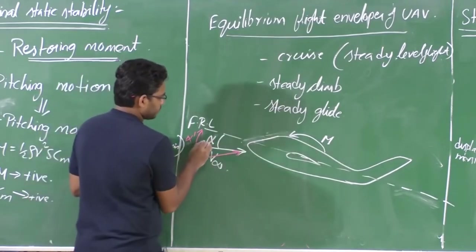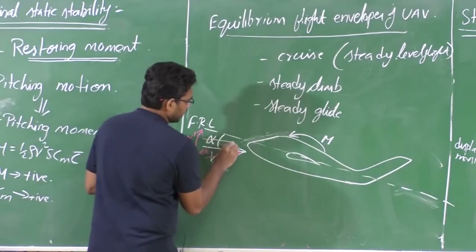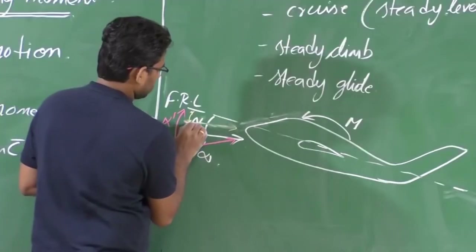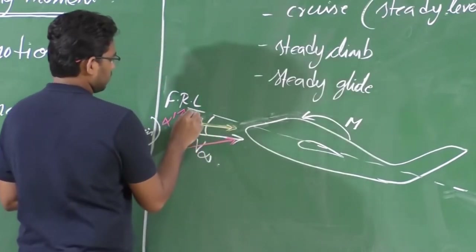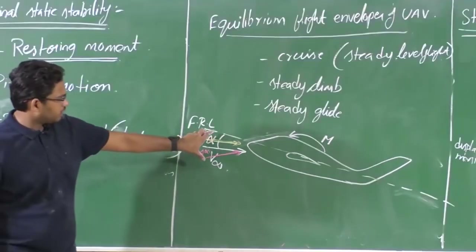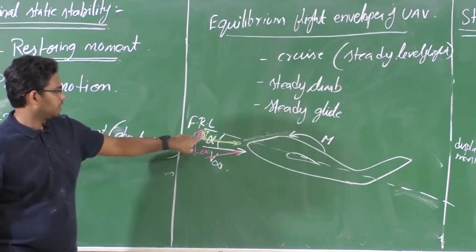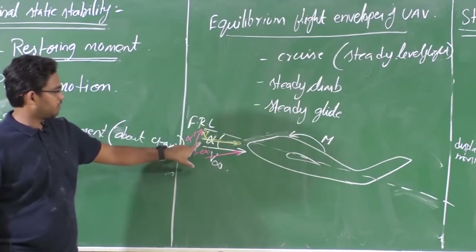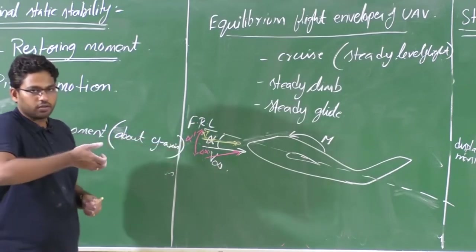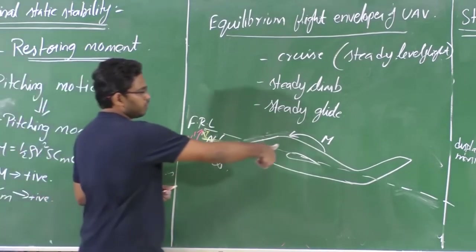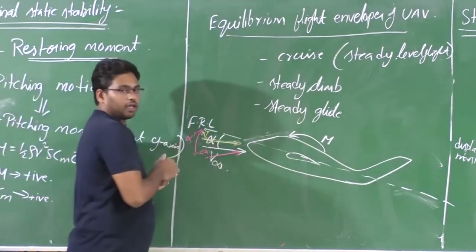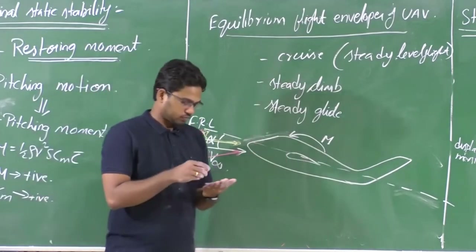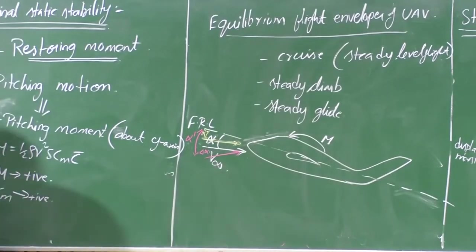Similarly, when there is a decrease in angle of attack due to some disturbance — say alpha double prime — the aircraft must rotate such that the decrease in angle of attack is recovered, returning to the initial alpha. If alpha′ is less than alpha, I need to rotate the aircraft up — give a nose-up motion. So, for a negative change in alpha, I need to increase the moment; for an increase in alpha, I need to decrease the moment. That is when we can say the aircraft possesses longitudinal static stability.